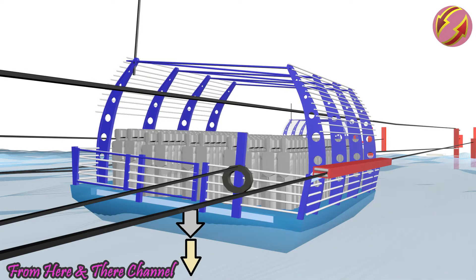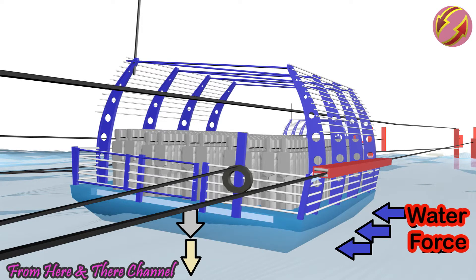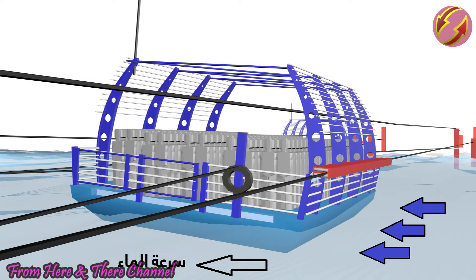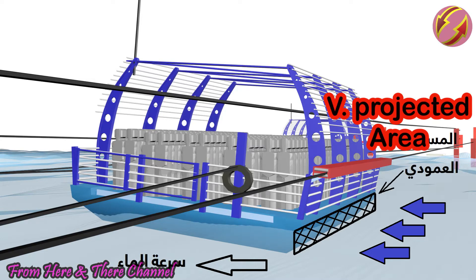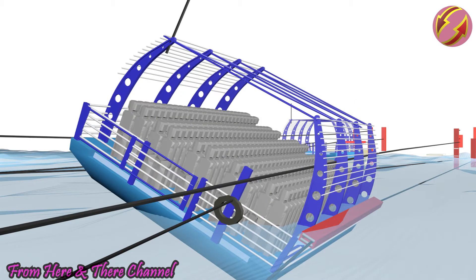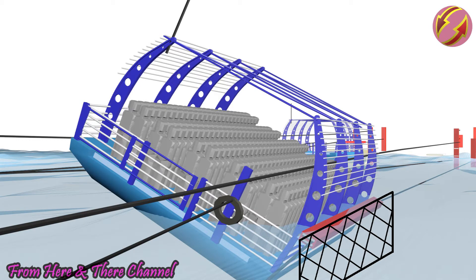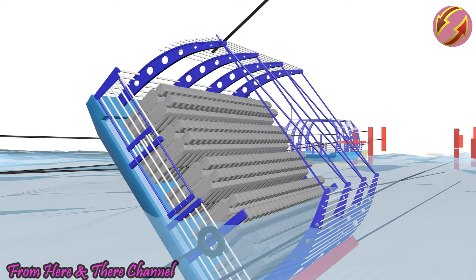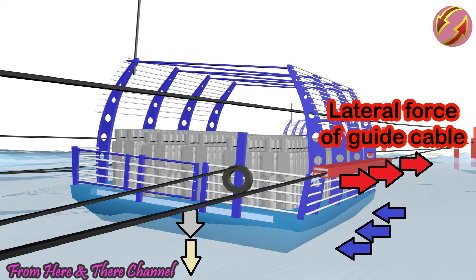The first two forces act downwards, causing an increase in the submerged depth of the ferry but counteracting the tilting moment. 3) Water force — this is a major force in the accident. This force is proportional to the square of the water's velocity, so it increased dramatically on the day of the accident. It is also proportional to the vertical projected area of the submerged part. The more the ferry tilted, the more it sank in the water, increasing the vertical projected area facing the current, which further increased the water force and tilting angle — a self-reinforcing cycle.